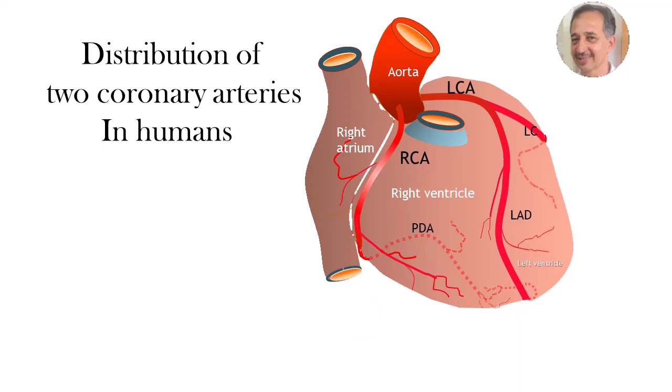The left coronary artery begins as a short main branch and then divides into the left anterior descending artery and the left circumflex artery. The left anterior descending artery supplies the interventricular septum and the anterior surface of the left ventricle. The left circumflex artery supplies the lateral aspect and a smaller portion of the inferior surface of the left ventricle.